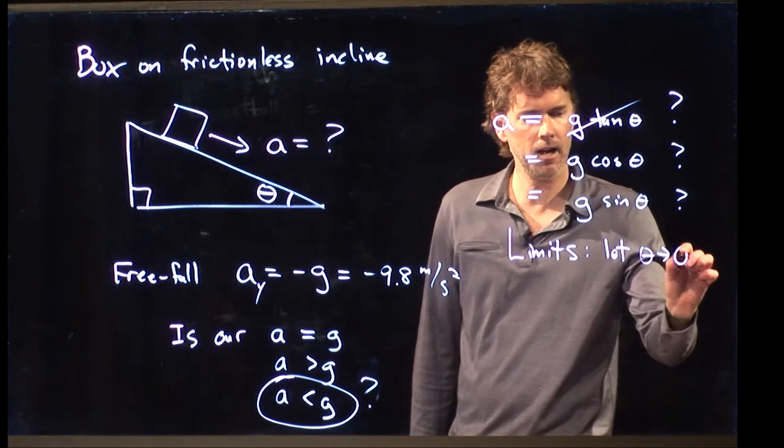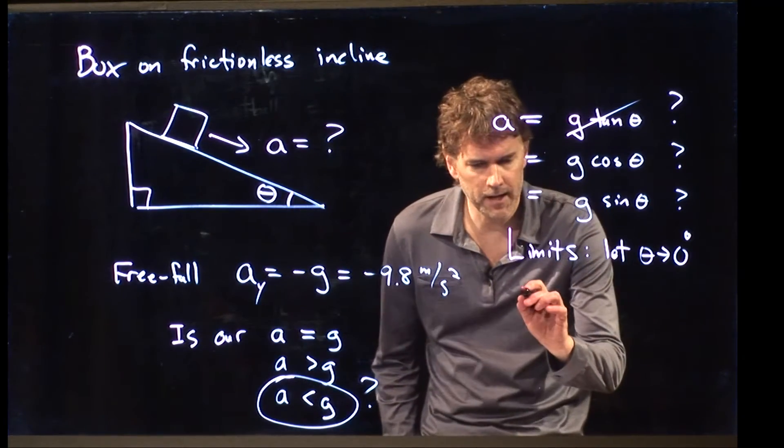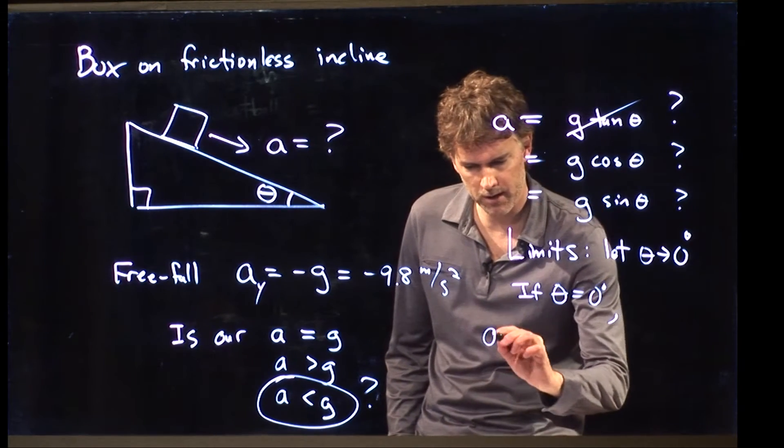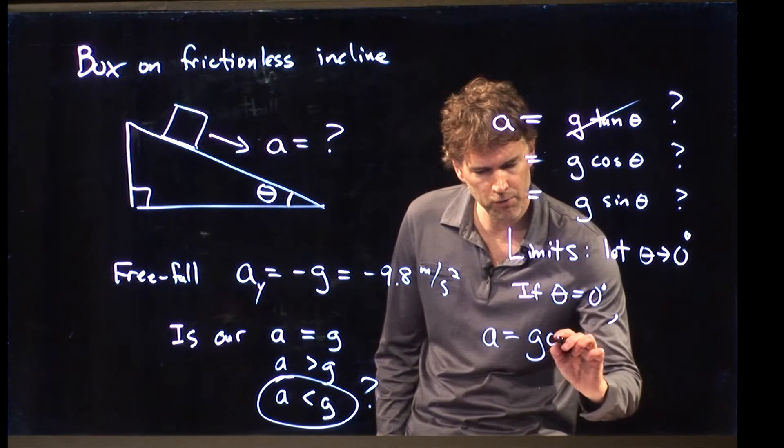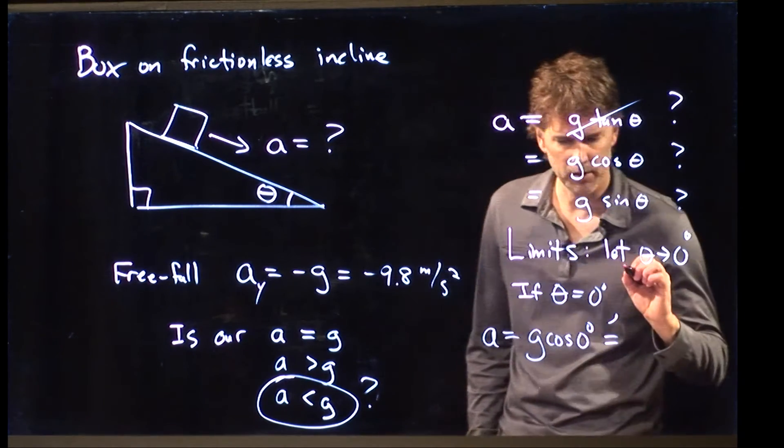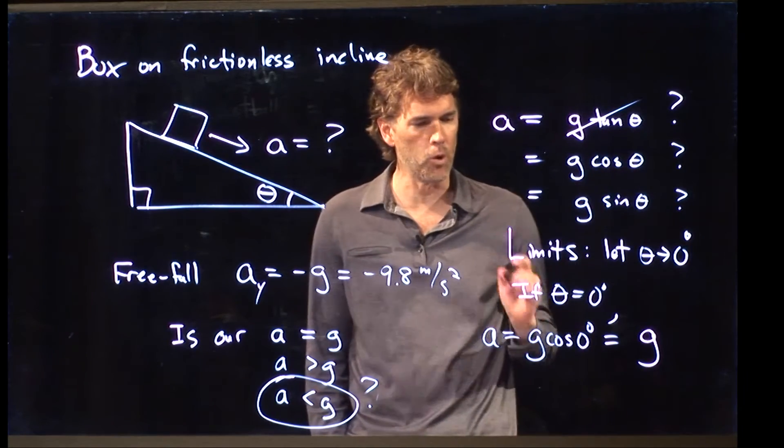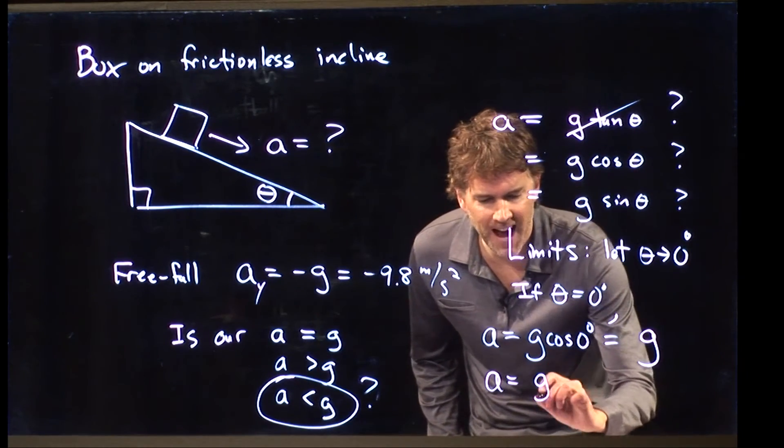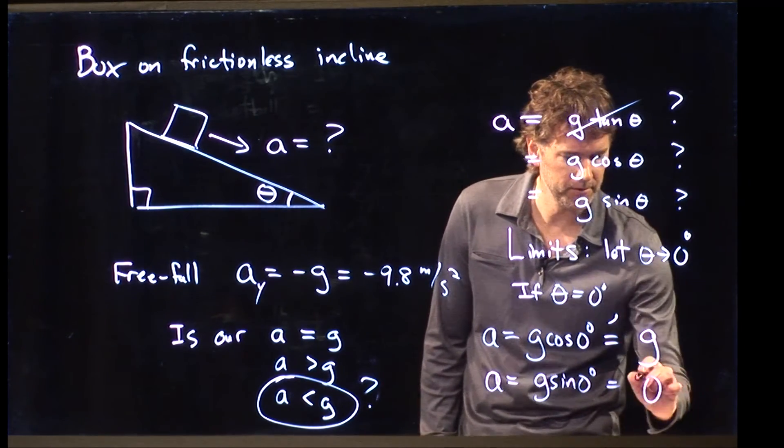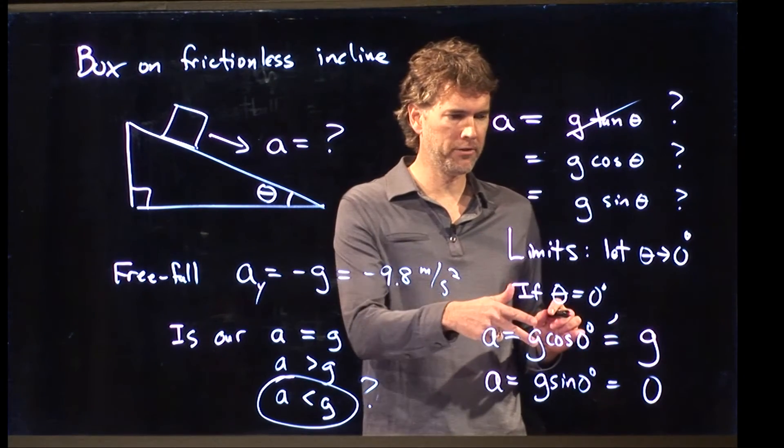Let's look at the limits. Let's let theta go to zero degrees. So if theta equals zero degrees, what do we get for these accelerations? Well, if a is equal to g cosine of zero degrees, what's cosine of zero degrees? One. Good. Cosine of zero degrees is one. What about sine of zero degrees? That's the one that's zero, all right? So we get zero.